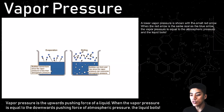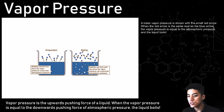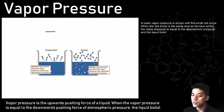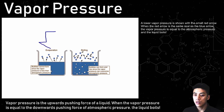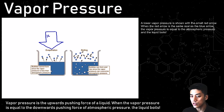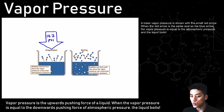Vapor pressure becomes really easy to understand if you think of it in terms of what is pushing down and what's pushing upwards. So vapor pressure is the upwards pushing force that allows a liquid to evaporate or to boil. Here I'm drawing a downwards arrow, and this represents the atmospheric pressure, which at sea level is 14.7 pounds per square inch. This is what keeps water a liquid at room temperature, because there's weight pressing down on the water so it's unable to become steam.